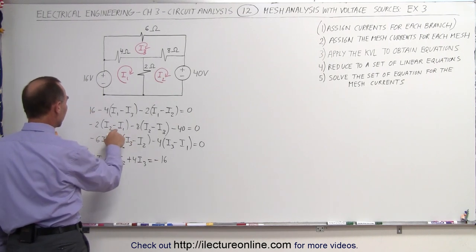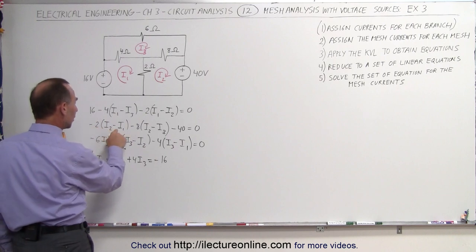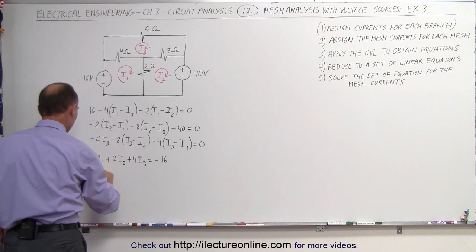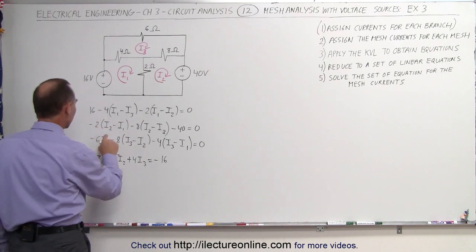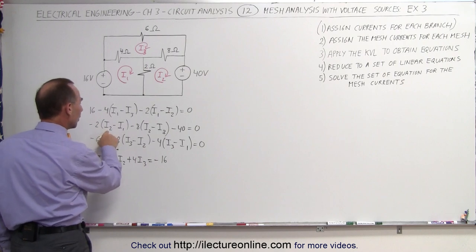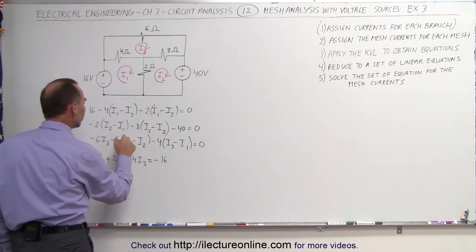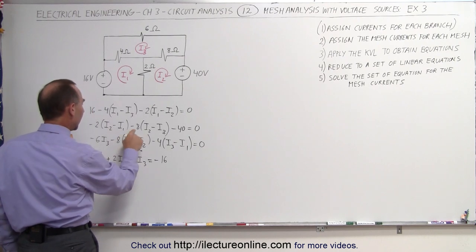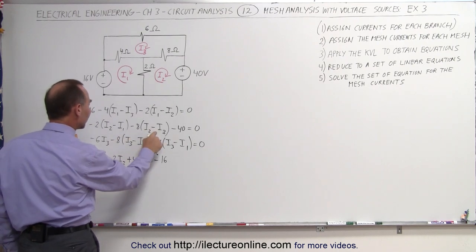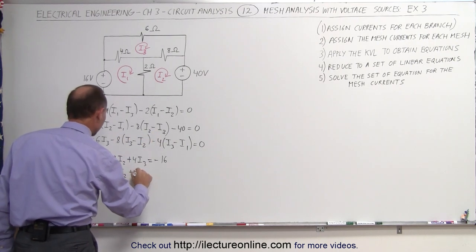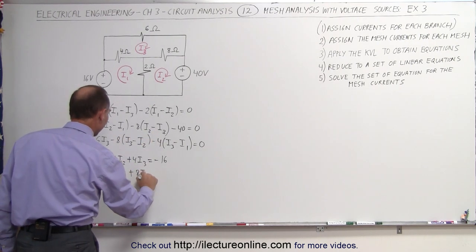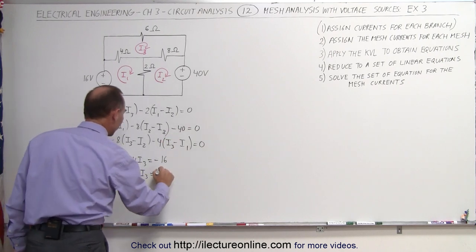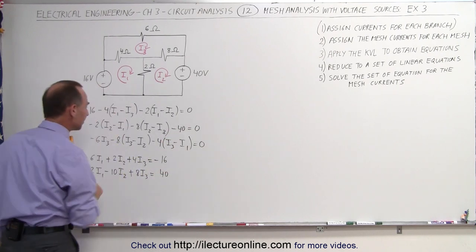Second equation: minus times minus is plus 2I1. Minus 2I2 minus 8I2 gives minus 10I2. And we have minus times minus, so that's plus 8I3. Equals — bring the 40 across — that becomes positive 40 on the right side of the equal sign.